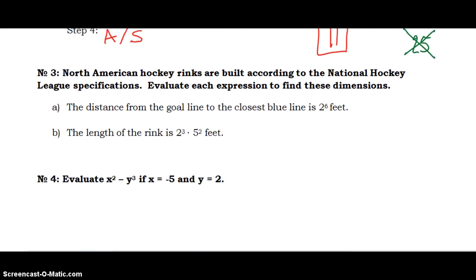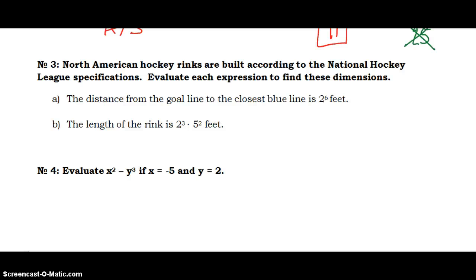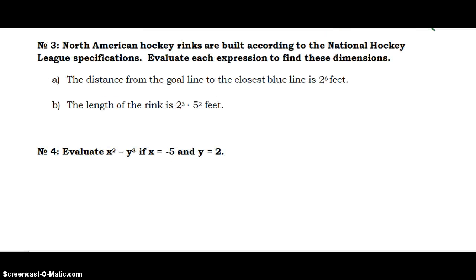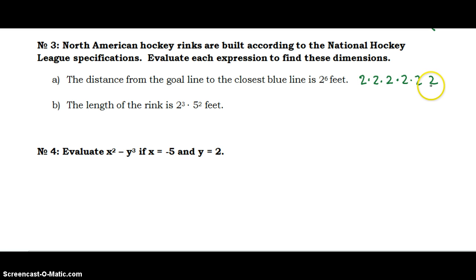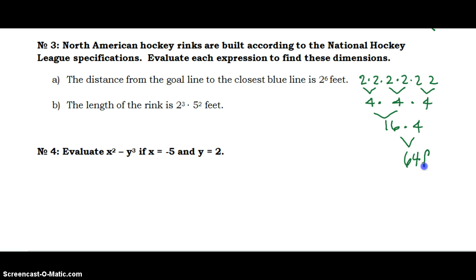Let's look at a word problem. North American hockey rinks are built according to the National Hockey League specifications. Evaluate each expression to find these dimensions. The distance from the goal line to the closest blue line is 2 to the 6th power feet — that means 2 times 2 times 2 times 2 times 2 times 2. You can do this on your calculator, or work it out: 2 times 2 is 4, 2 times 2 is 4, 2 times 2 is 4, and 4 times 4 is 16, and 16 times 4 gives us 64. So it's 64 feet.